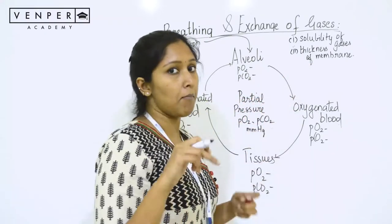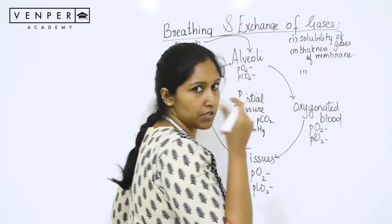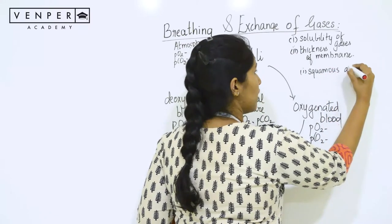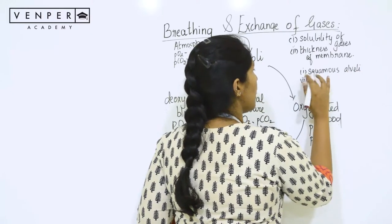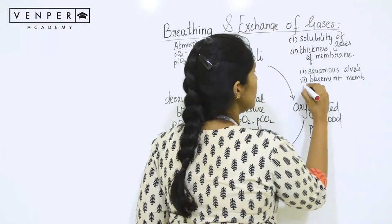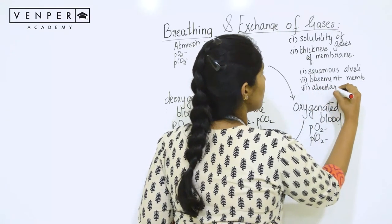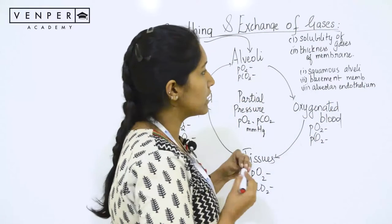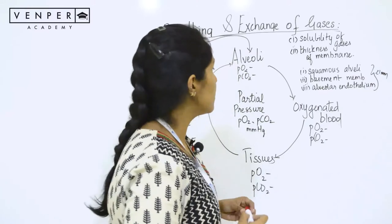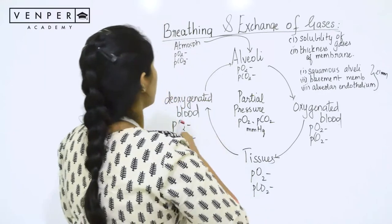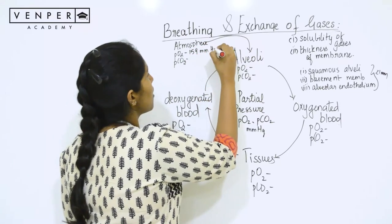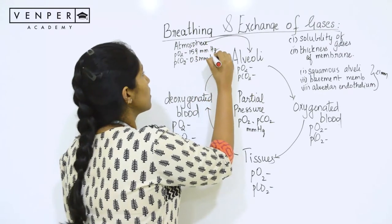The difference in partial pressure of oxygen and carbon dioxide brings about the exchange process. The exchange surface in the alveoli consists of three layers: the squamous epithelium of the alveoli, the basement membrane, and the alveolar endothelium. Despite having three layers, the total thickness is less than one millimeter. In the atmosphere, the partial pressure of oxygen is around 159 mmHg and for carbon dioxide it is very low, around 0.3 mmHg.